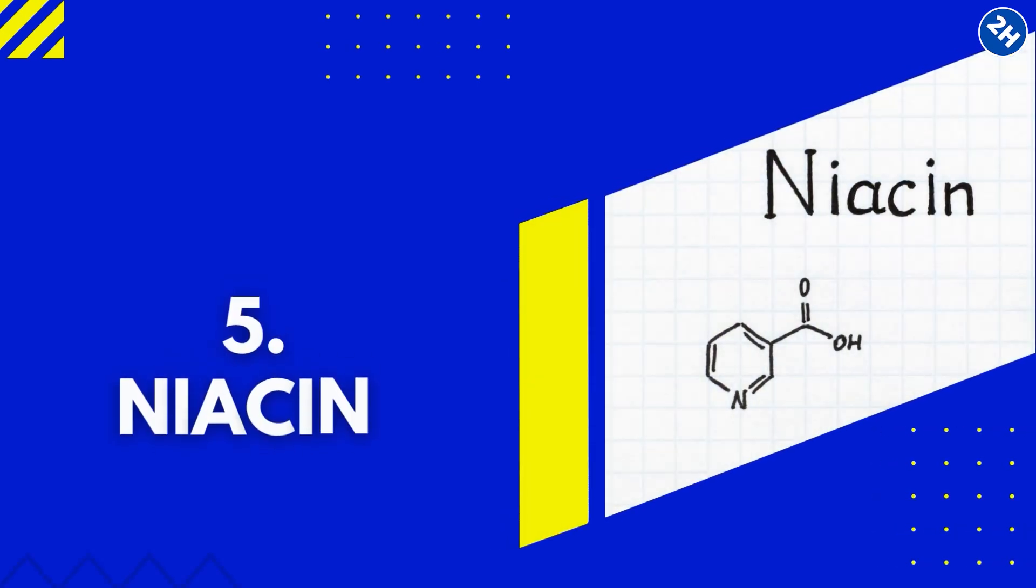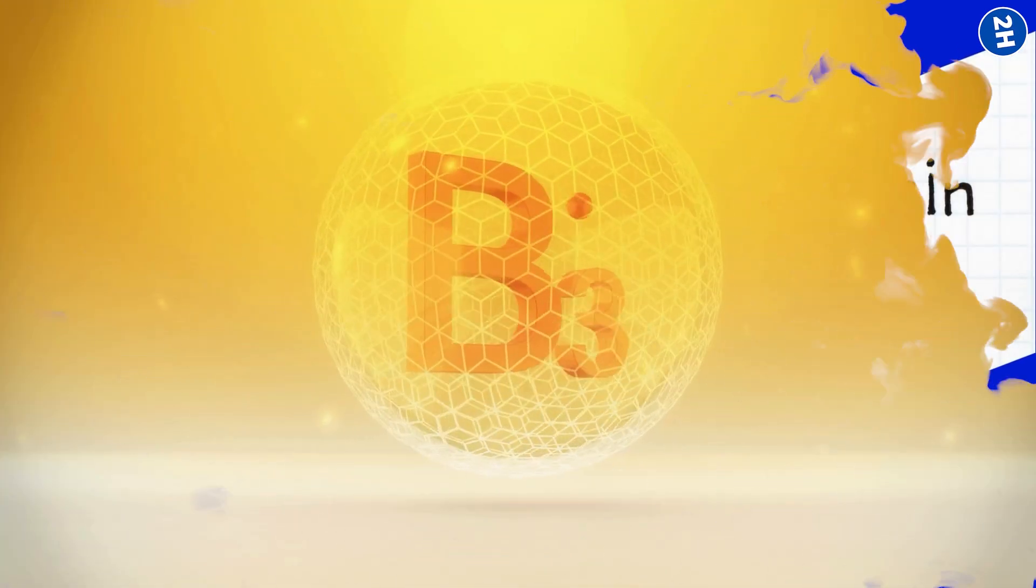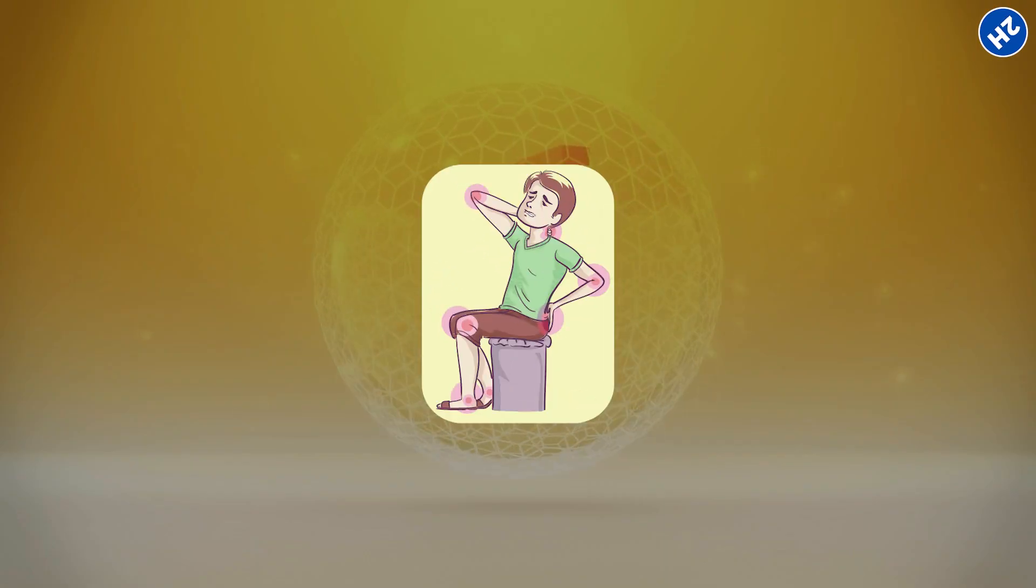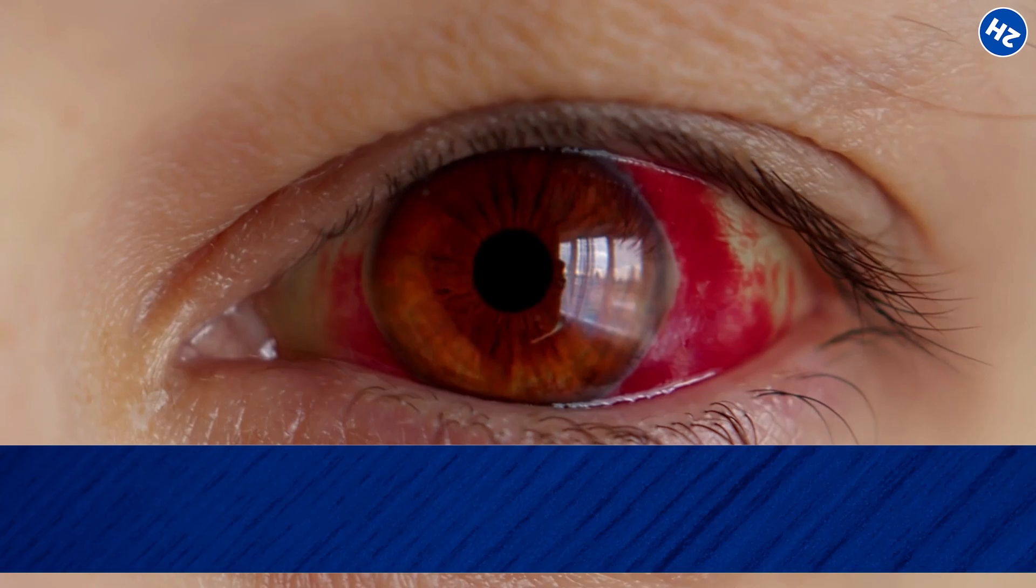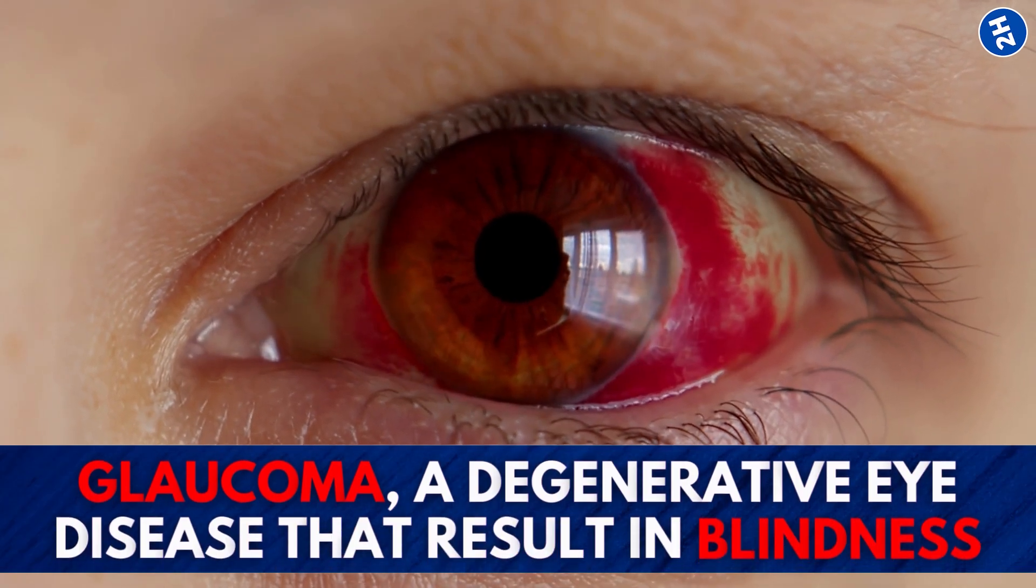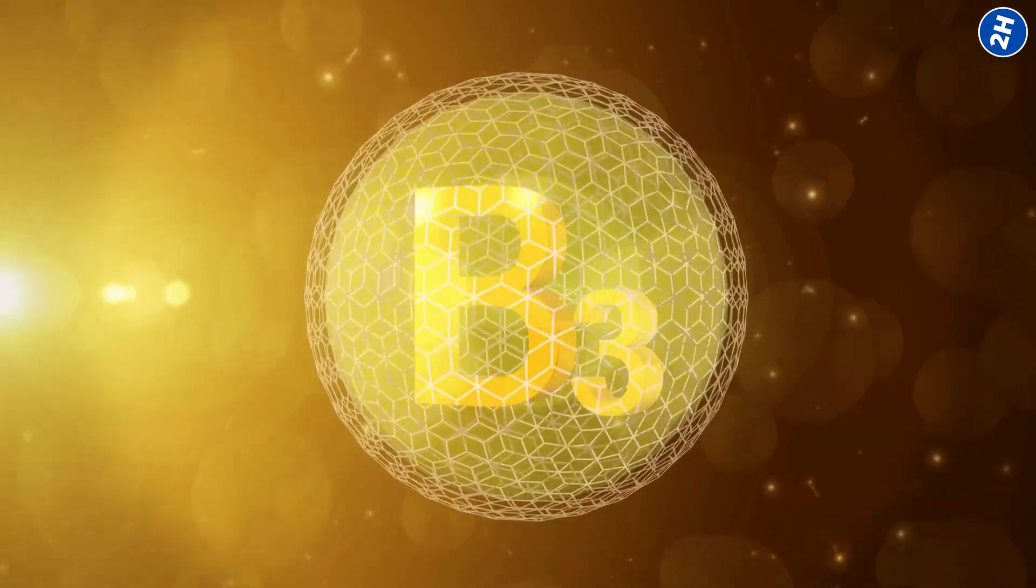Number 5. Niacin. Niacin, also known as vitamin B3, reduces damage and inflammation in the body and promotes healing. According to recent studies, glaucoma, a degenerative eye disease that results in blindness, can be avoided by vitamin B3.